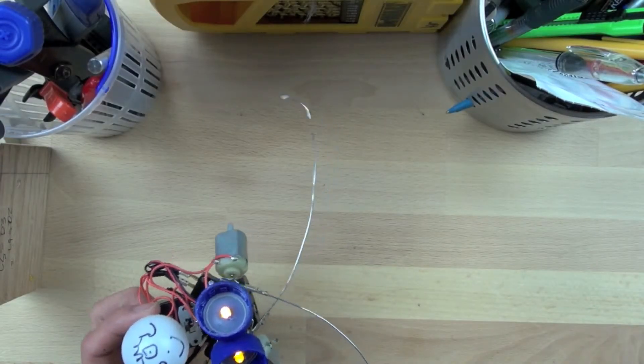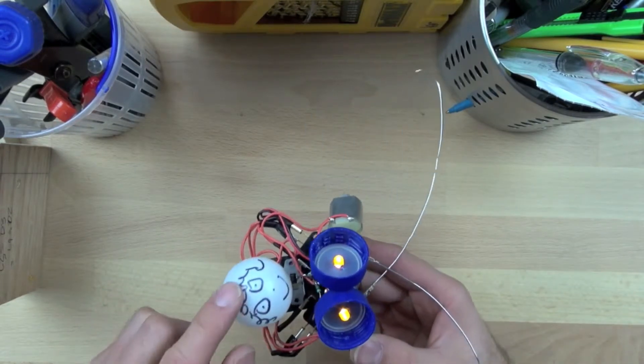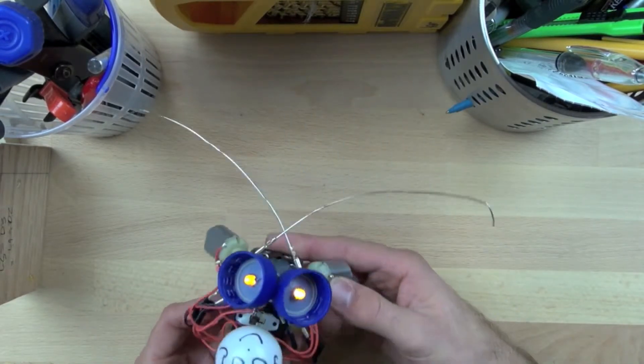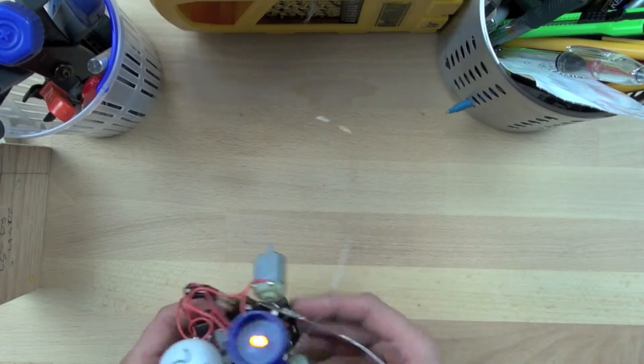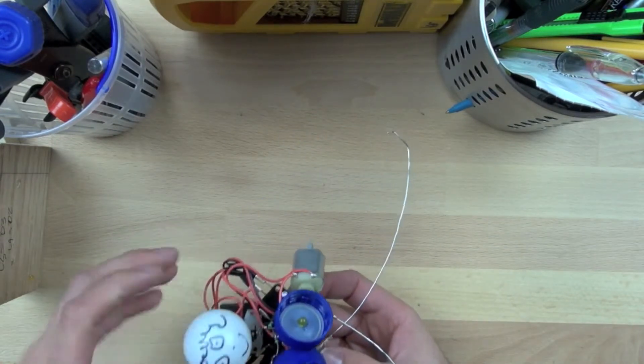In this video we're going to build a BeetleBot. This particular BeetleBot is going to get Sally, our ping pong ball friend, out of an obstacle course. BeetleBots can be seen on websites like Instructables and Make. We're building this one to rescue our friend Sally.